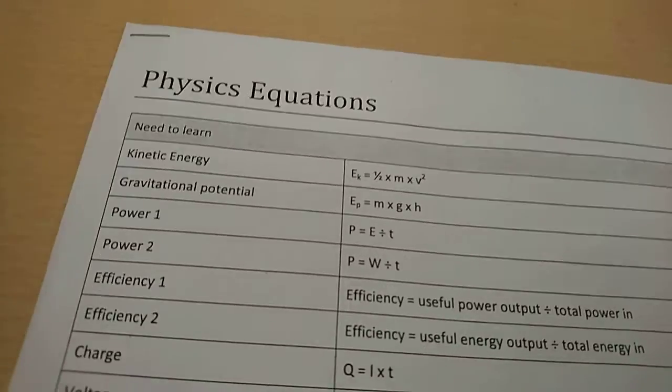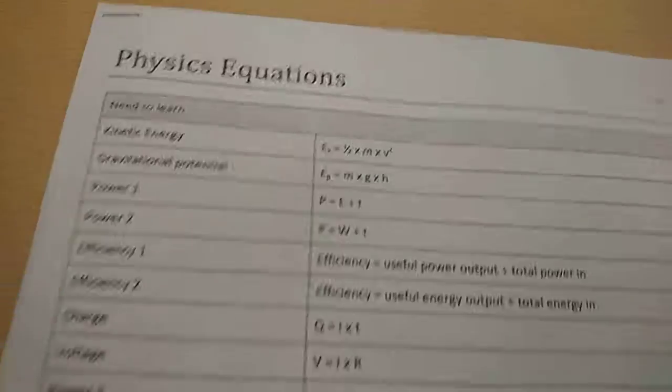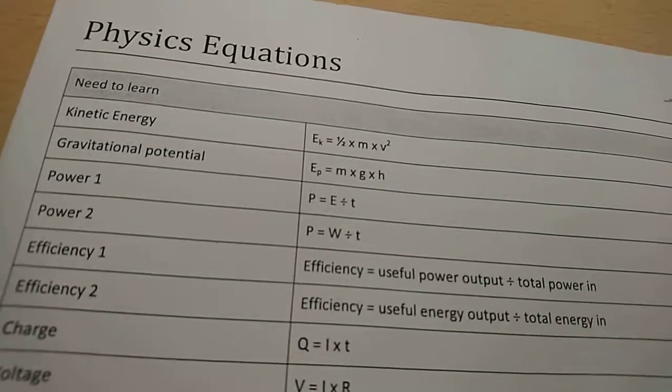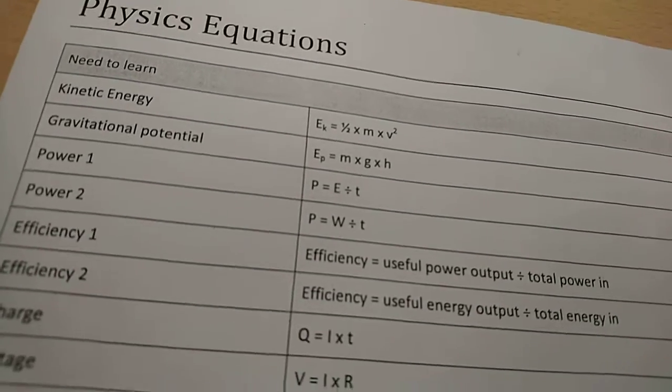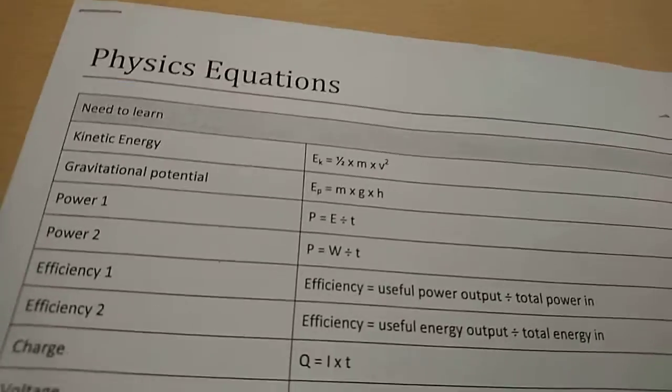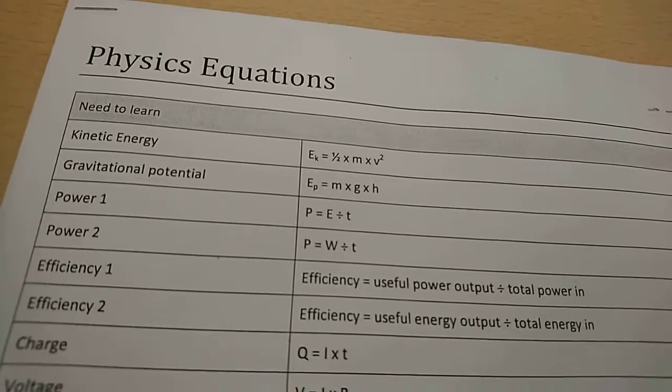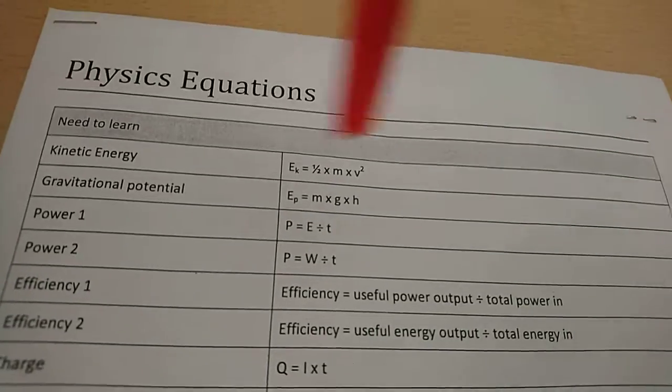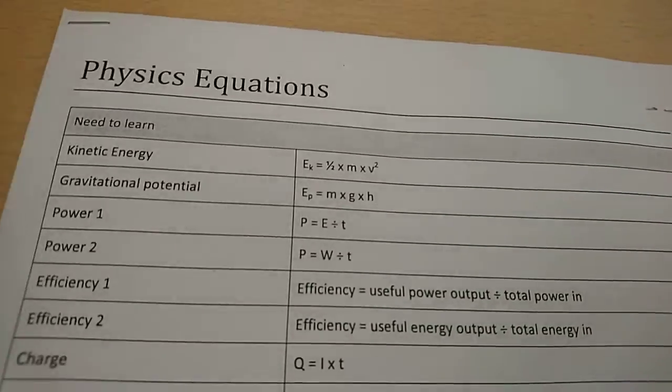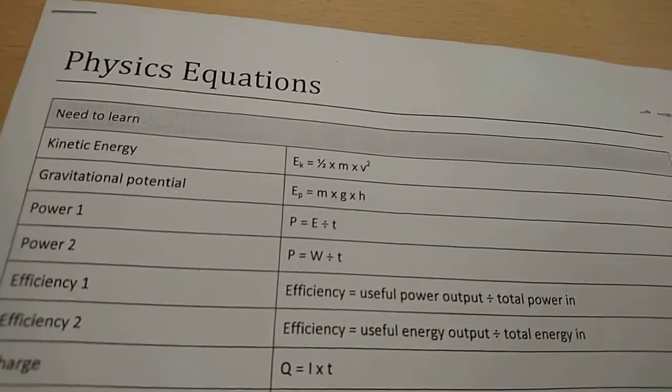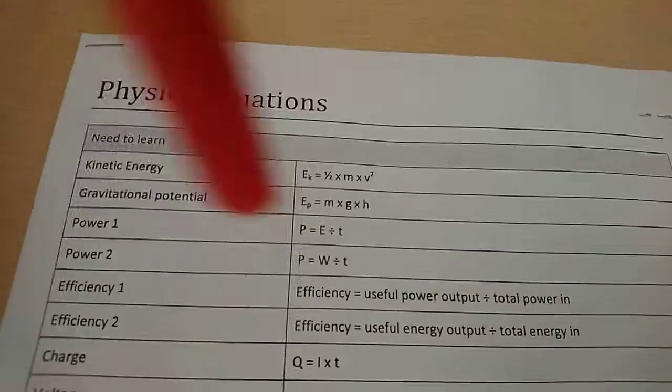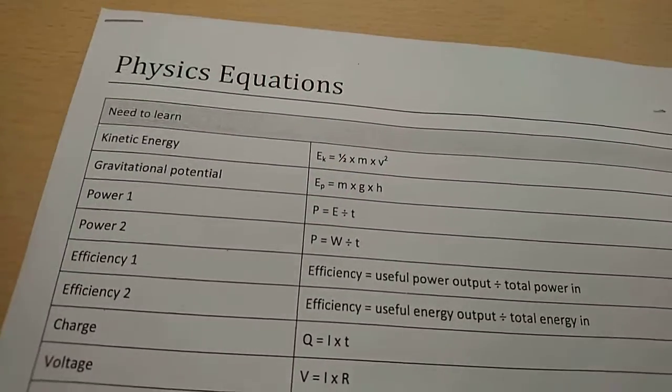So next, power one. This is the first one, which is power equals energy over time. Then power two is power equals work done over time. Energy and work done are basically the same thing, so these basically mean the same thing. They're just maybe worded differently in a question. For example, it might give you something as energy or it might give you something as work done. We know both of them to be in joules, and power is in watts and time is in seconds.